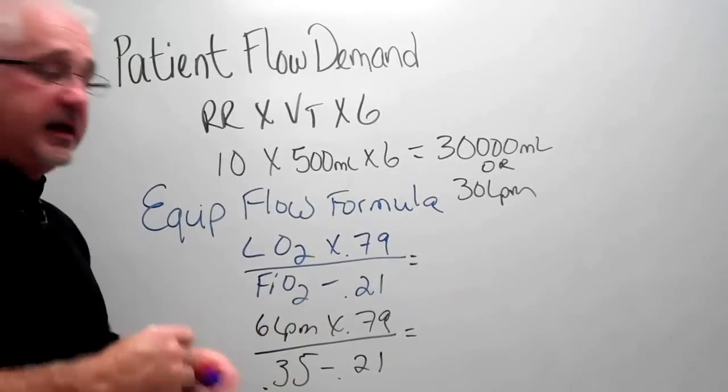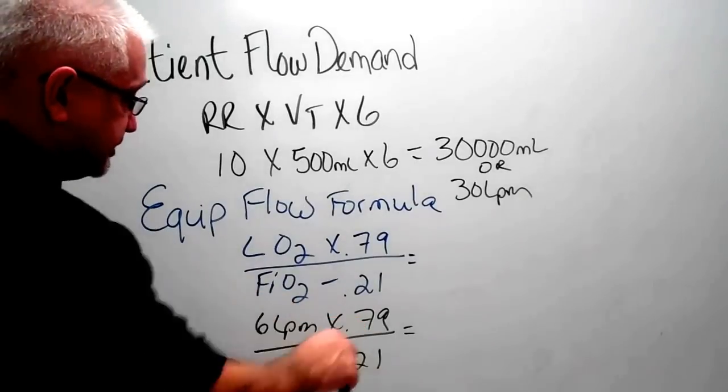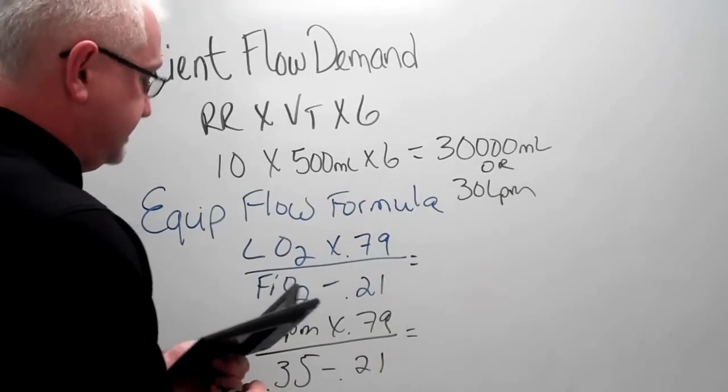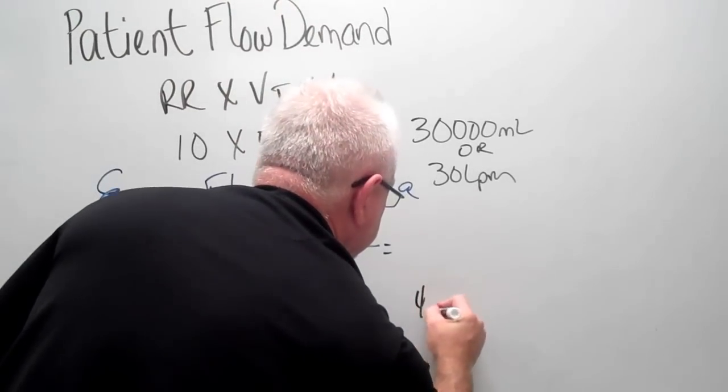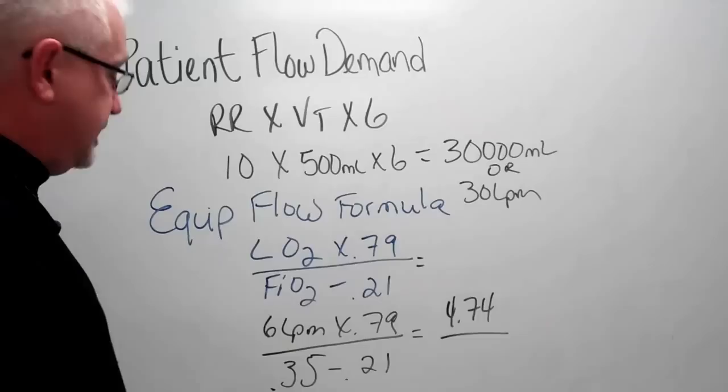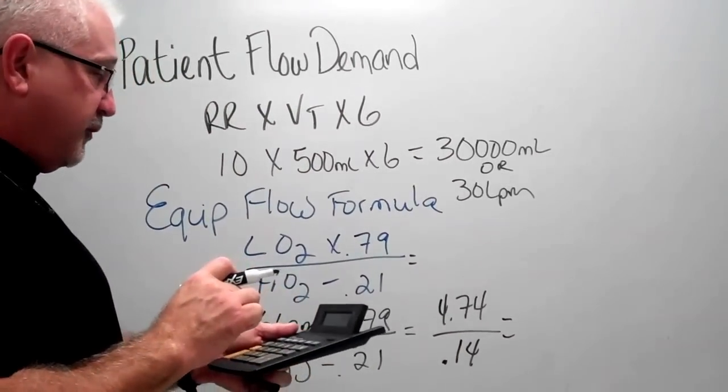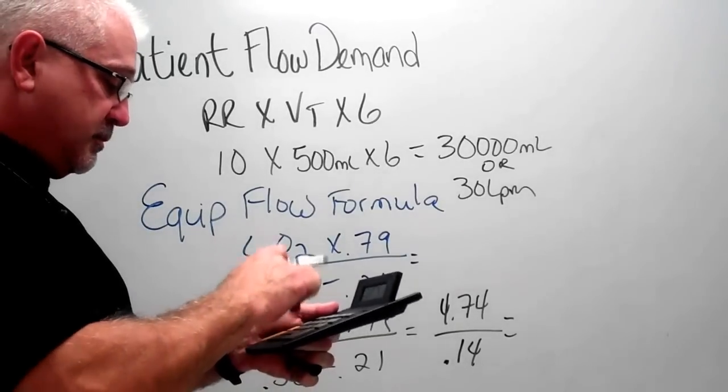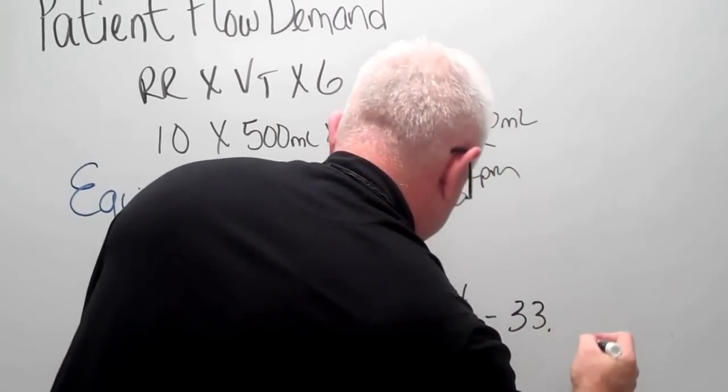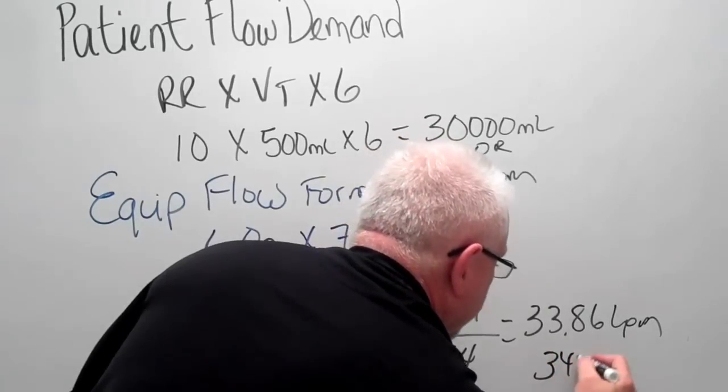We're going to get our calculator out, and we're going to do 6 times 0.79, which is 4.74, and 0.35 minus 0.21 is 0.14. So you're going to do 4.74 divided by 0.14, and that's going to come up to 33.86 liters per minute, or rounding it off to 34 liters per minute.